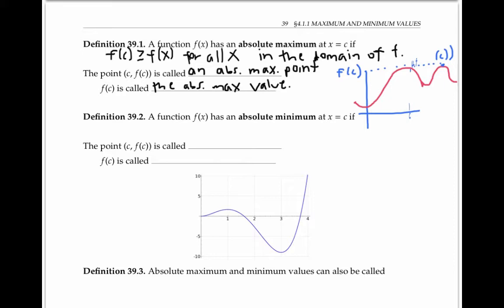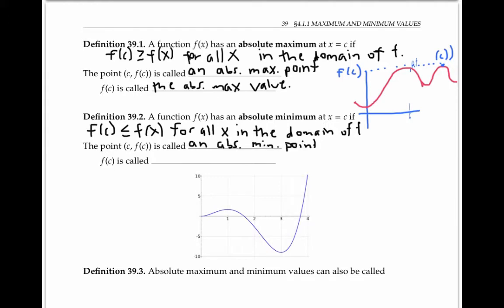A function f of x has an absolute minimum at x equals c, if f of c is less than or equal to f of x for all x in the domain of f. In this case, the point c, f of c is called an absolute minimum point. And the y value f of c is called the absolute minimum value. In the graph of f of x, f of c is the lowest point that the function achieves anywhere on its domain, and c, f of c are the coordinates of a point where the function achieves that minimum value.